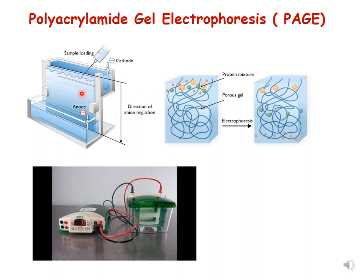When electrophoresis is performed using the power supply, the negatively charged proteins migrate from the negative to the positive electrode. The gel, composed of acrylamide and bisacrylamide, separates proteins based only on size: smaller molecules move faster and larger molecules move slower. The rate of movement is inversely proportional to the size of the protein molecule. Here you can see the electrophoretic chamber connected with the power supply.